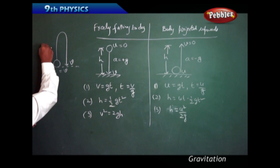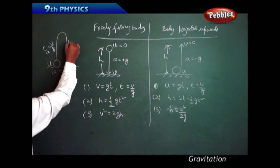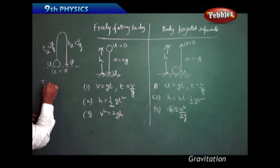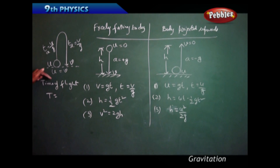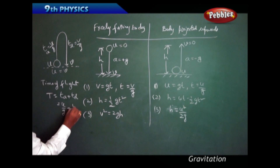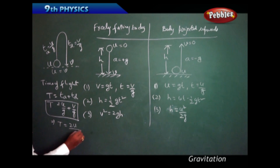From the ground to the highest point, the time of ascent T_A = U/G. From the highest point back to ground, the time of descent T_D = V/G. The time of flight is the total time taken by the body to move to the highest point and come back to the same level. Therefore, total time T = T_A + T_D = U/G + V/G, and since U = V, we can write T = 2V/G or T = 2U/G.